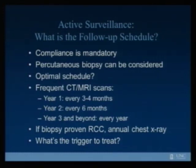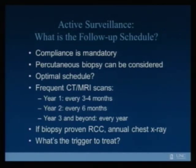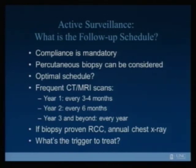Percutaneous biopsy can be considered, as mentioned in the American Urological Association guidelines. They recommend CT, MRI, or imaging at six months and then annually thereafter. At UNC we use a more aggressive surveillance regimen: in the first year we image every three to four months, so that you have a growth trajectory — two points on that line to see where things are going. If size is stable in that first year, we move imaging out to every six months and then annually. If there is a biopsy-proven renal cell carcinoma, an annual chest x-ray is recommended to look for any spread of disease.